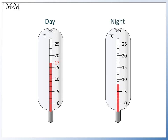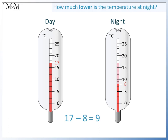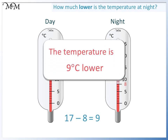The nighttime temperature is shown on this thermometer. It's 3 increments higher than 5. To find its value, we can count on from 5: 6, 7, 8. So the temperature is 8 degrees C. How much lower is the temperature at night? We could count on from 8, or subtract 8 from 17. 17 take away 8 equals 9, so the temperature is 9 degrees C lower at night.